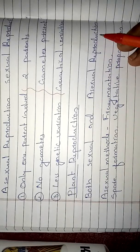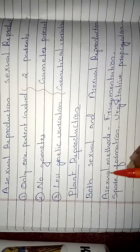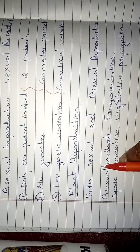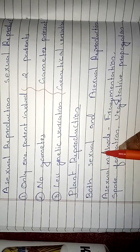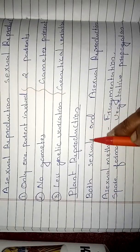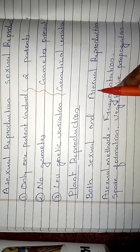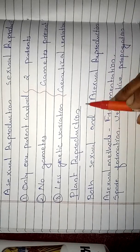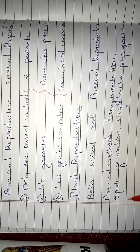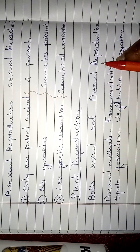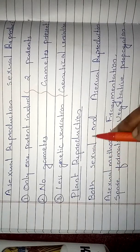These are the two types of reproduction. Now we are going to look at plant reproduction. In plants, both sexual and asexual modes of reproduction are present. We all know that flowers are there in plants — flowers consist of the male and female reproductive organs of the plant. We will look at the details of sexual reproduction in plants afterwards.